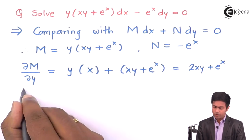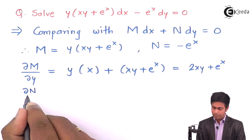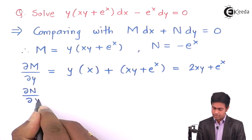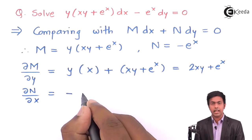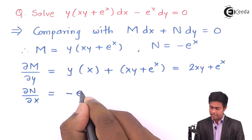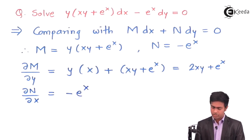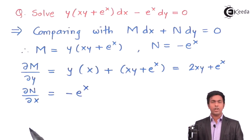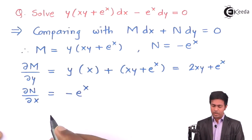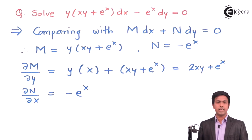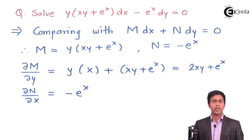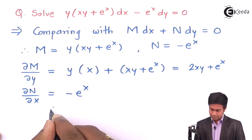Now let's check ∂N/∂x: that will be −e^x. Observing carefully, the value of ∂M/∂y is not equal to ∂N/∂x, and hence we say that the given differential equation is not exact.